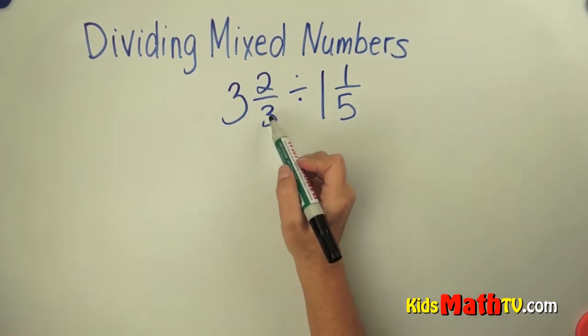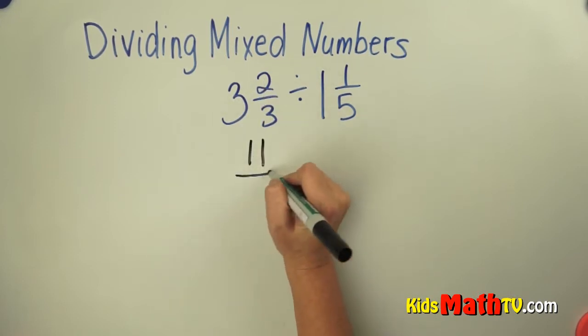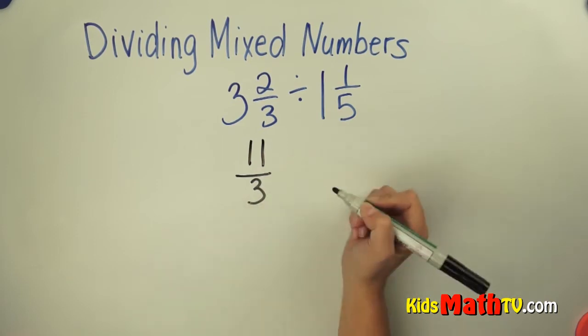So to do that you do 3 times 3 is 9, and 9 plus 2 is 11, and the denominator stays the same, 3.